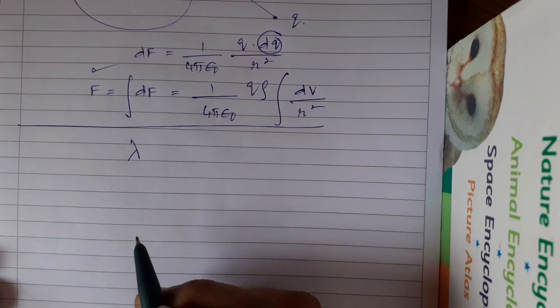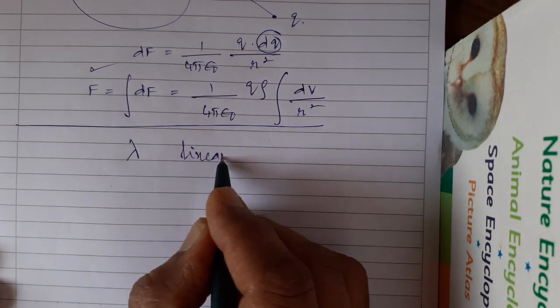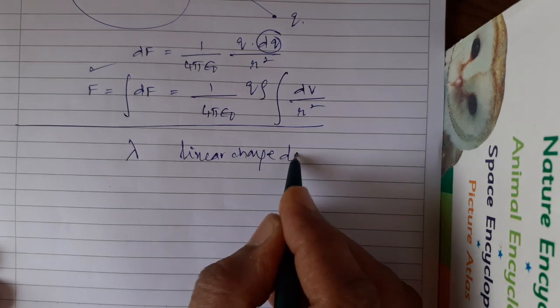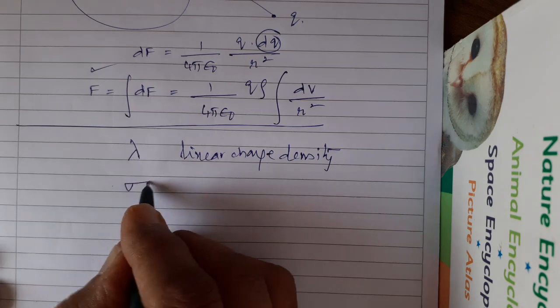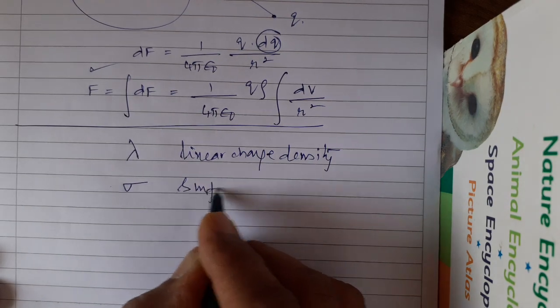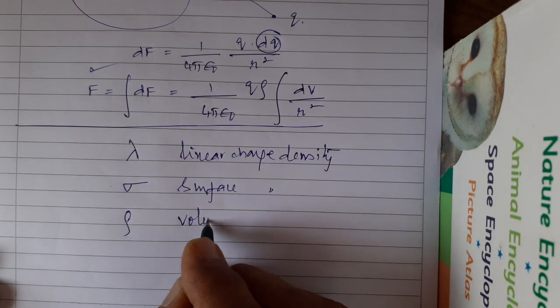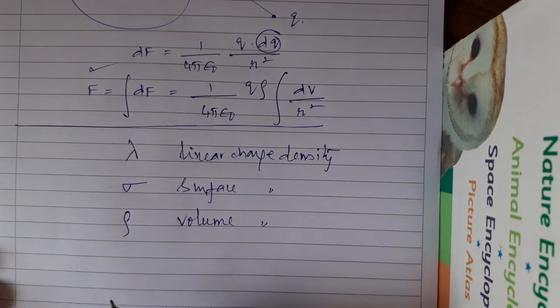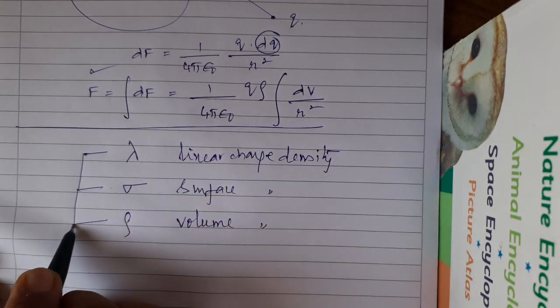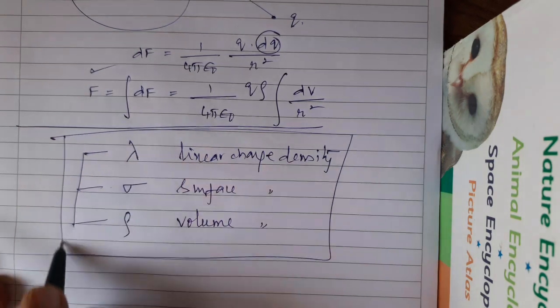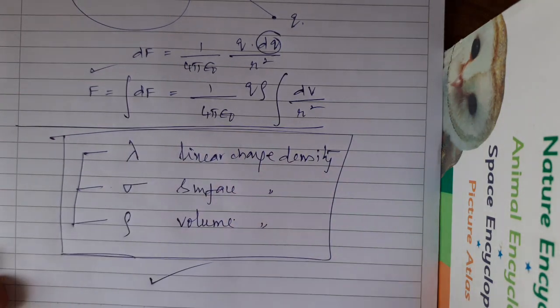One is lambda. What is lambda? Lambda is linear charge density. Linear charge density means charge per unit length. Sigma, surface charge density, that means charge per unit area. Rho, volume charge density, charge per unit volume. So we have three such types of charge densities, which come under continuous charge distribution. Bye.